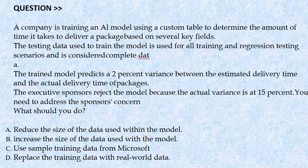The executive sponsors reject the model because the actual variance is at 15 percent. You need to address the sponsors' concern. What should you do? Option A: Reduce the size of data used within the model. Option B: Increase the size of data used with the model. Option C: Use sample training data from Microsoft. Option D: Replace the training data with real-world data.